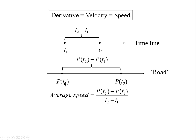But as t2 approaches t1, we make the interval smaller and smaller. This approximation of the average speed to the true speed at point t1 will be better and better.